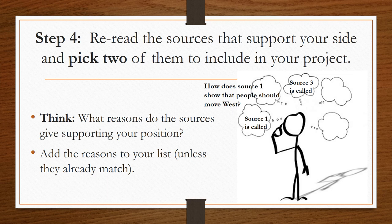For each of the sources that you choose — and you have to pick at least two — you are going to write in your history notebook how that source supports your position and add those reasons to your list unless they already match. For example, if I picked source one, I would write source one, call it by its name, and then ask myself how does source one show that people should move west, and write my response underneath.